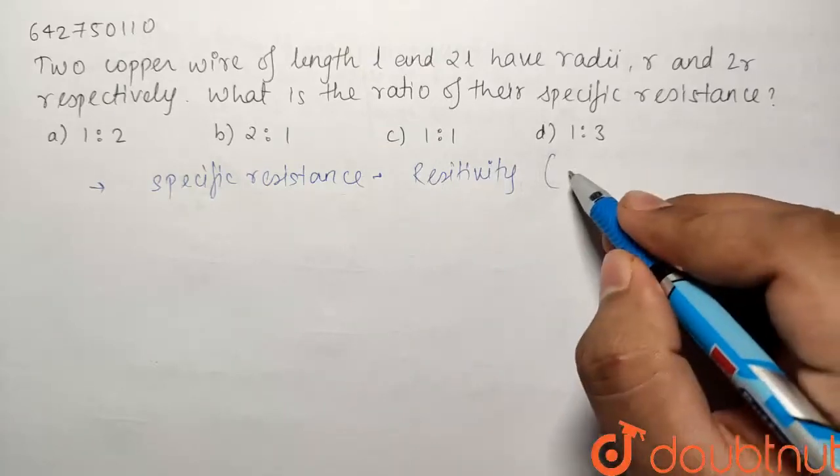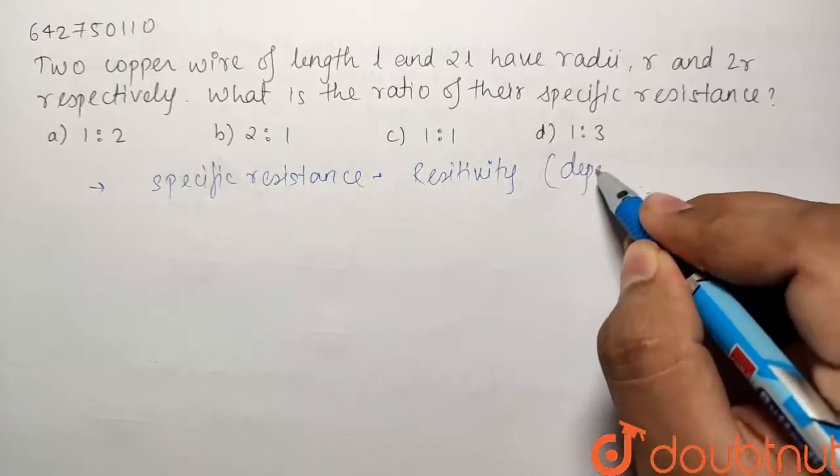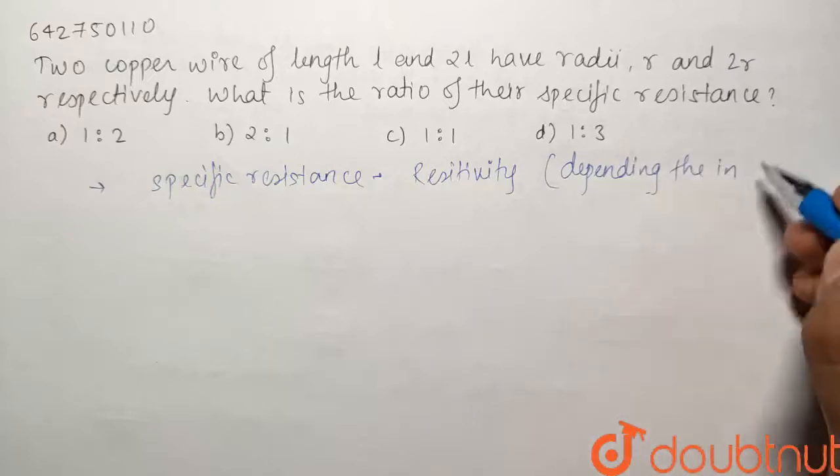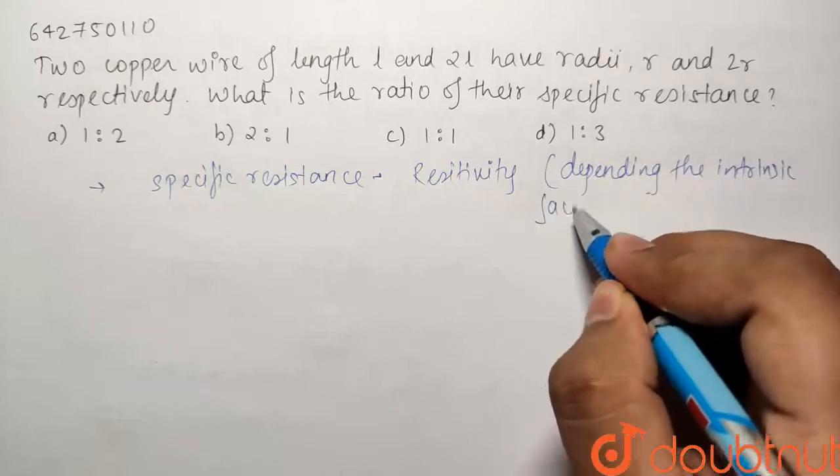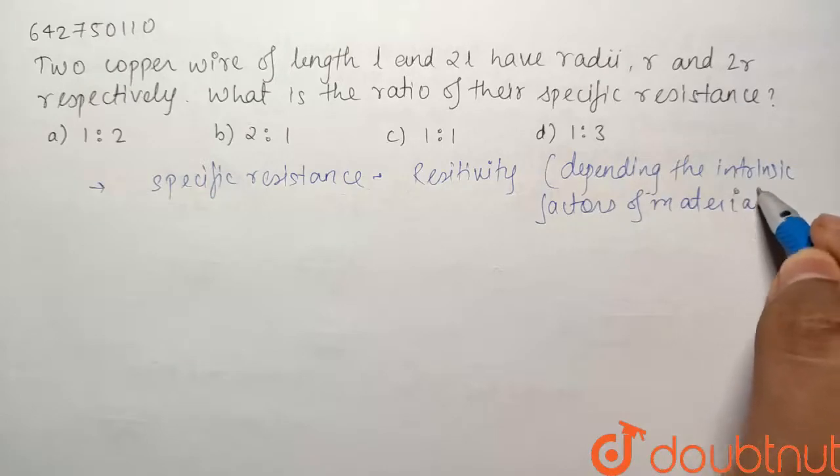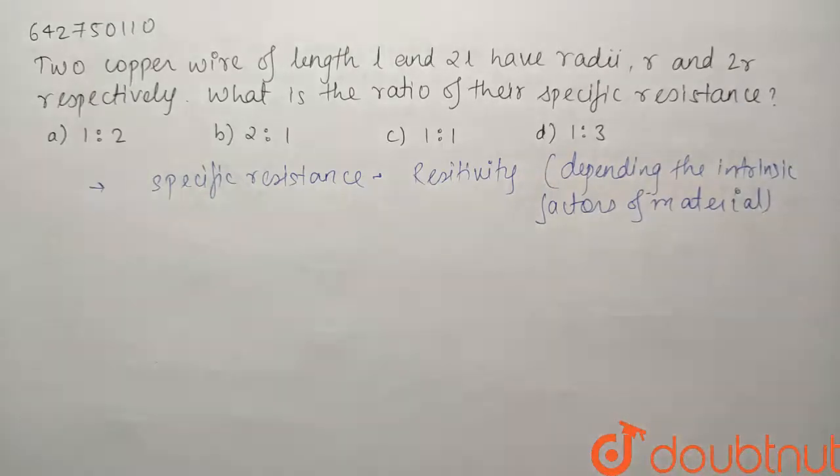And we know that resistivity is something that is depending on the intrinsic factors of the material. So basically, resistivity is the property of the material, and it does not depend on external factors like length and area.